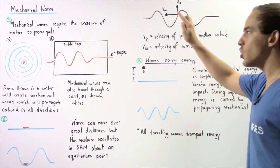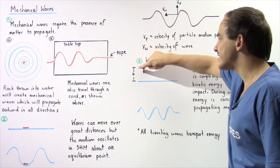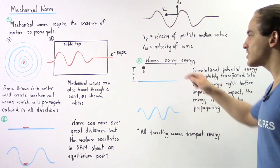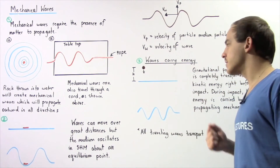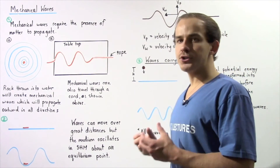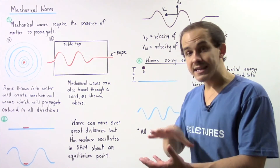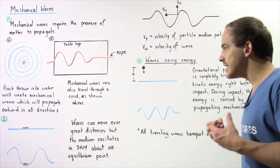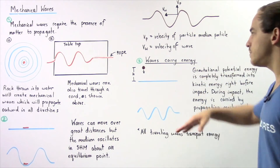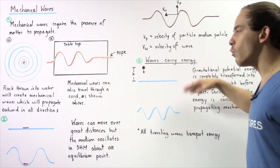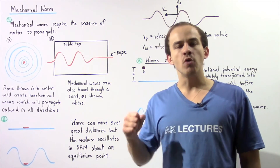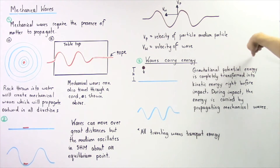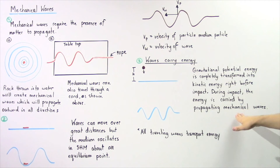When we take a rock and let it go from a height h above the surface of the water, the rock initially has gravitational potential energy. As it travels downward, it gains kinetic energy, and right before it impacts the surface of the water, all that gravitational potential energy has been converted to kinetic energy. When the object hits the surface, that energy is transferred to the molecules of the water, and those molecules begin vibrating — oscillating back and forth in simple harmonic motion. The waves carry that energy and transport it over great distances. So gravitational potential energy is completely transformed into kinetic energy right before impact, and during impact the energy is carried by propagating mechanical waves.